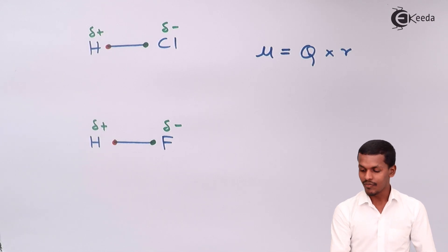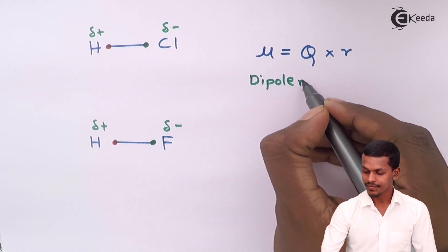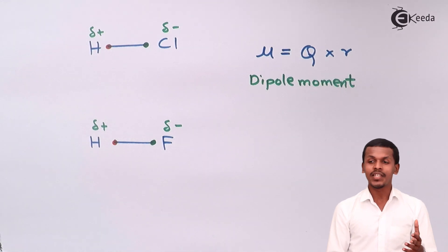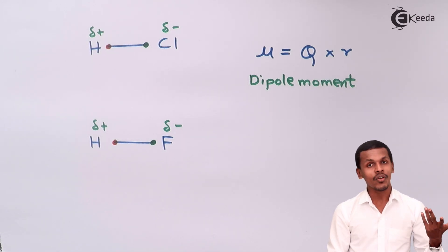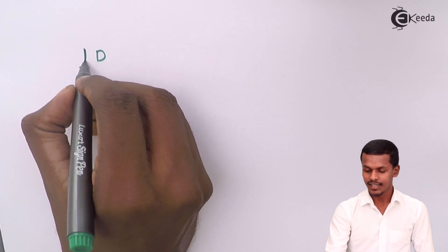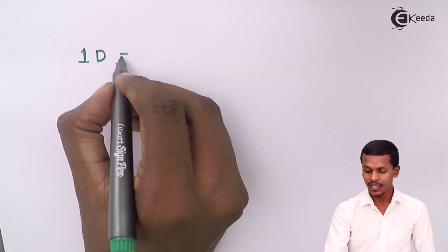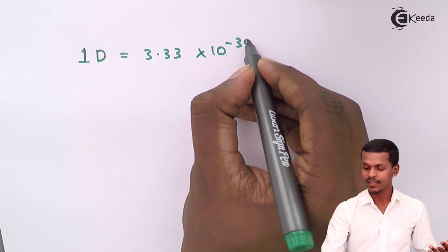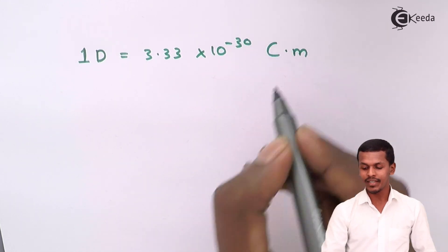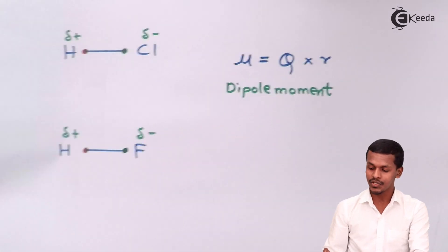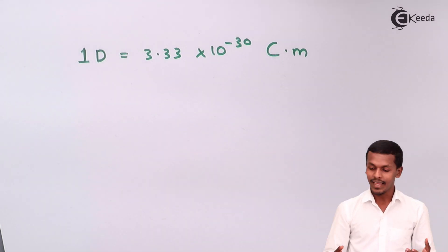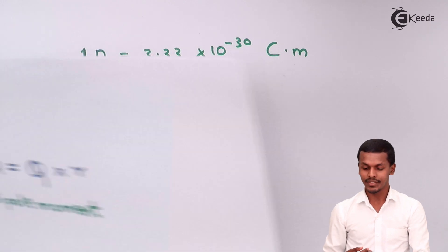Dipole moment is the measurement of the polarity of a covalent bond. It has a particular unit denoted by D (Debye), where 1 Debye equals 3.33 × 10⁻³⁰ coulomb·meter. The reason the unit is coulomb·meter is because μ = Q × R, where Q has units of coulombs and R is the distance in meters. Now let us talk about HCl and HF.